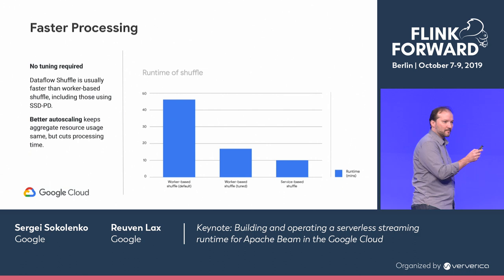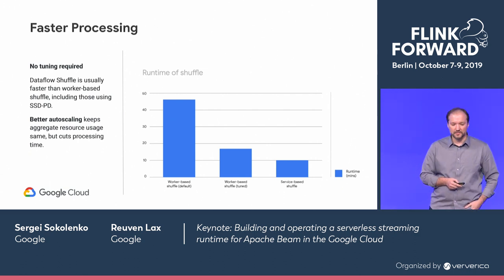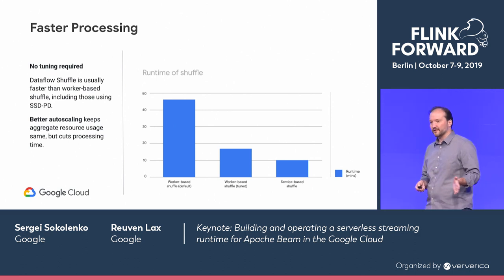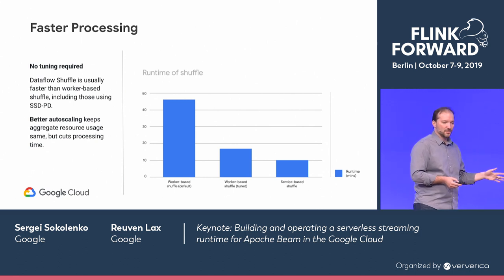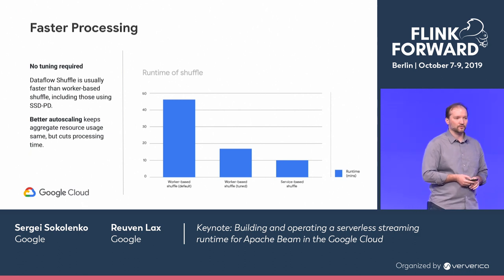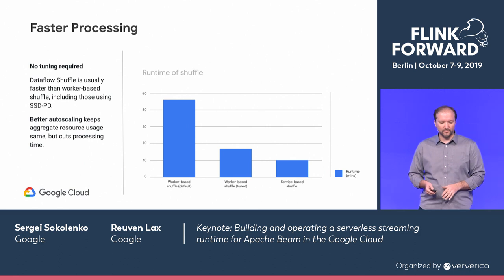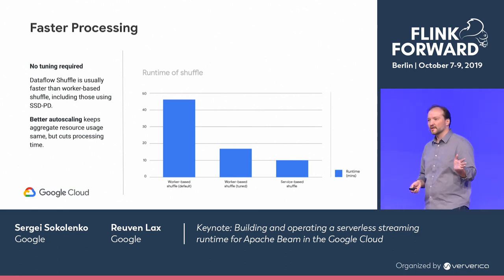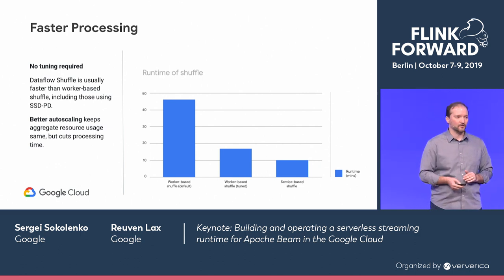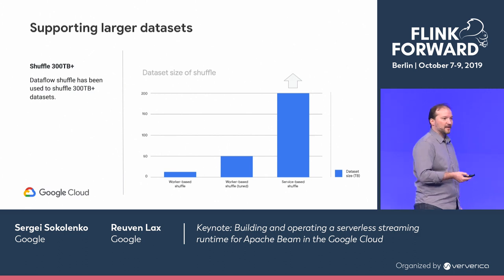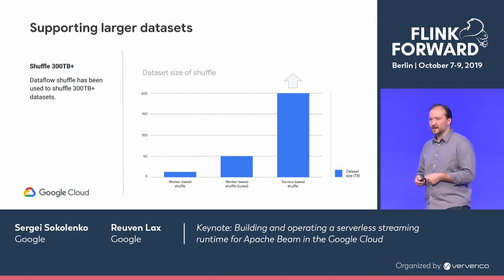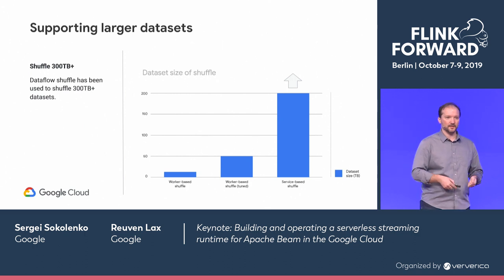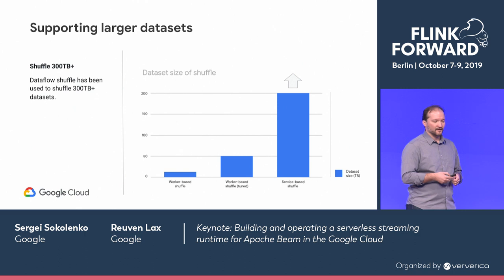The results of switching to this distributed shuffle service include significant performance improvements — pipelines running much faster, going from perhaps an hour down to about 10 minutes for a shuffle job. Another benefit is the ability to support larger datasets. Customers now run shuffle jobs on hundreds of terabytes; the largest is currently around 400 or 500 terabytes, and the size keeps increasing.